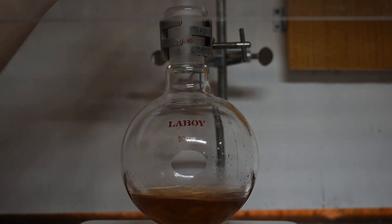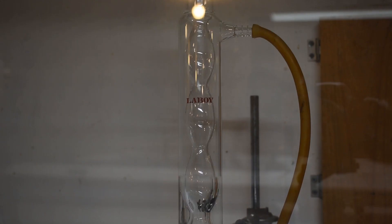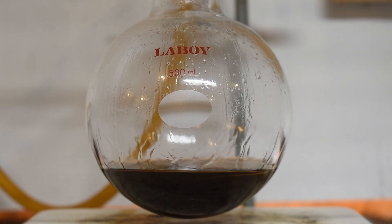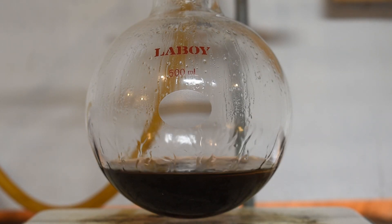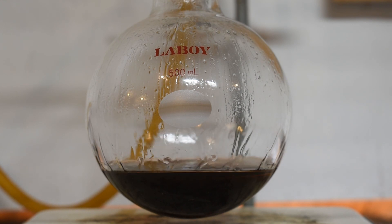After I finished adding my reactants, I added a reflux condenser to the top of the flask and began heating. As you can see, the hotter the mixture gets, the darker it gets, but that's okay because these impurities will be removed in later steps.